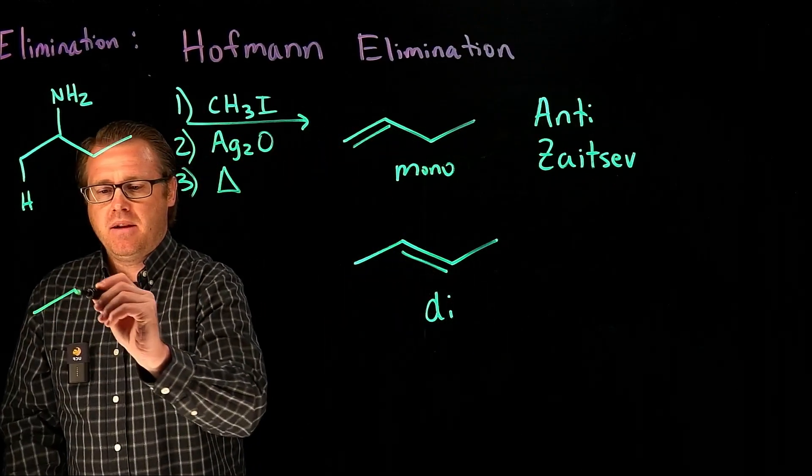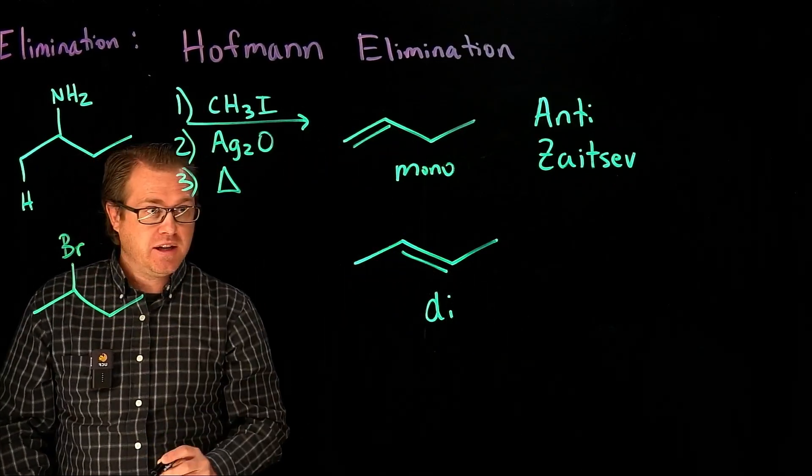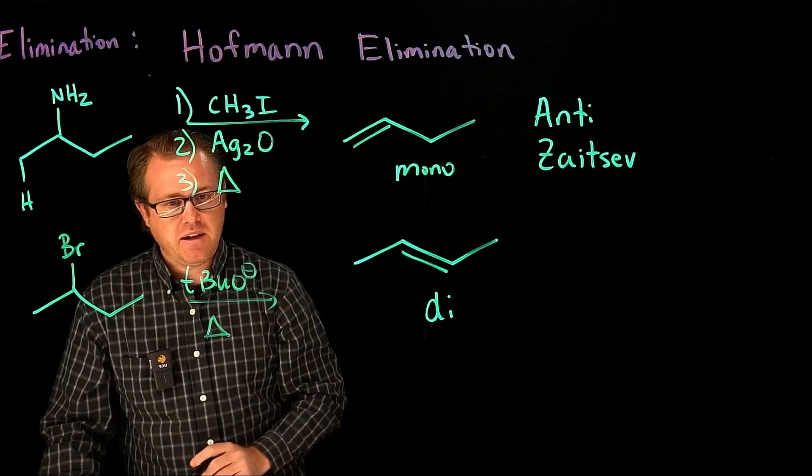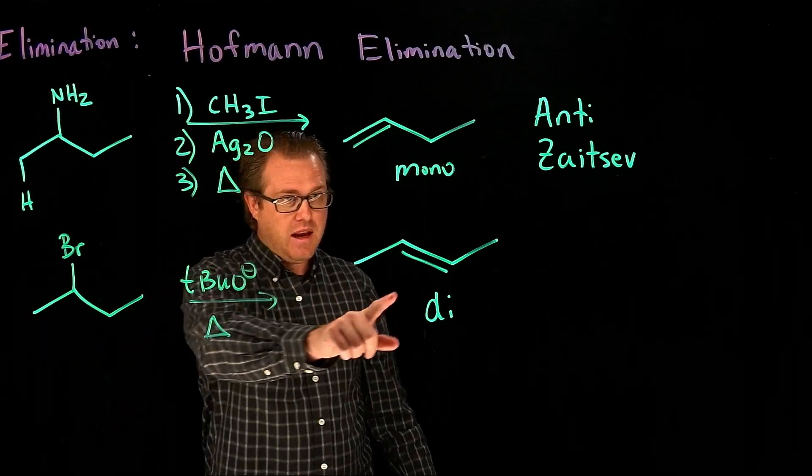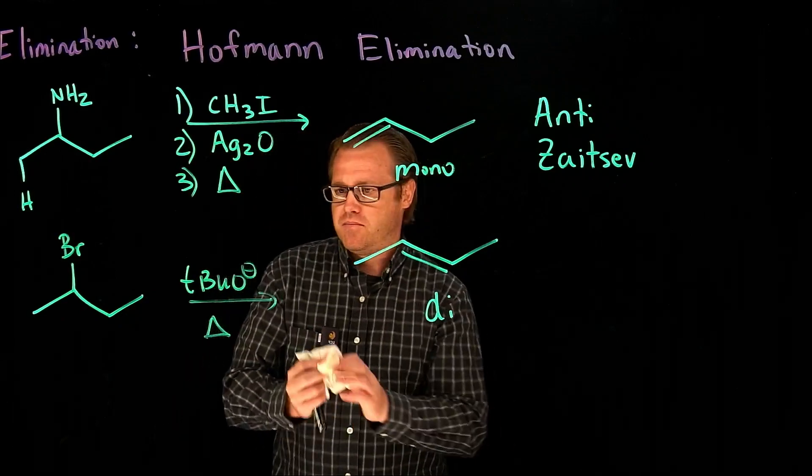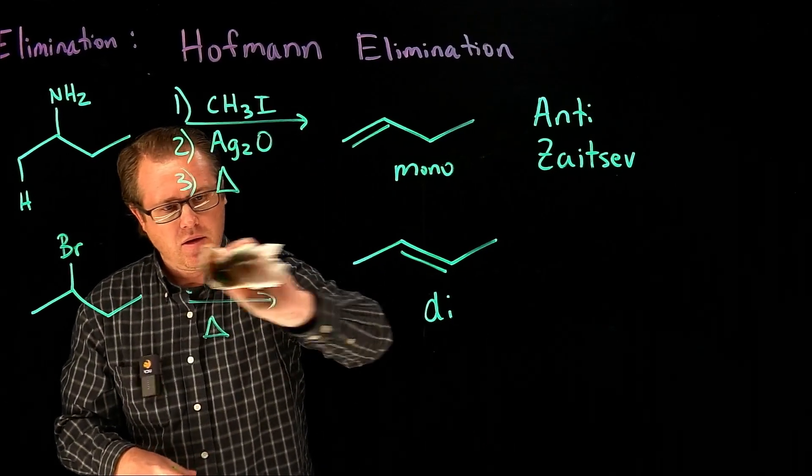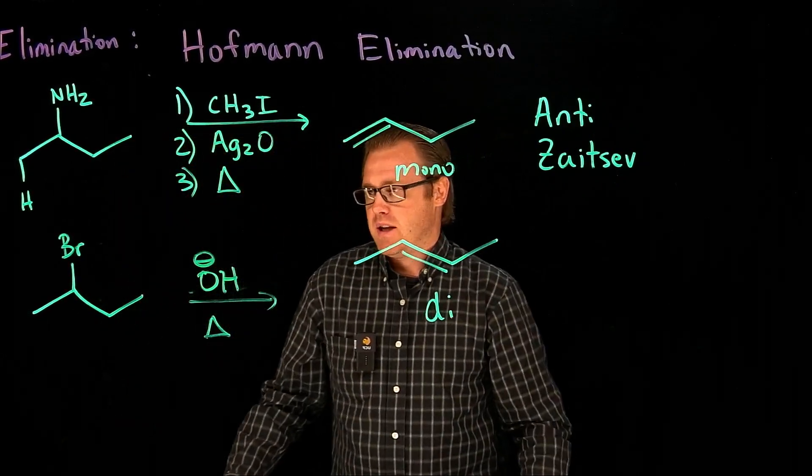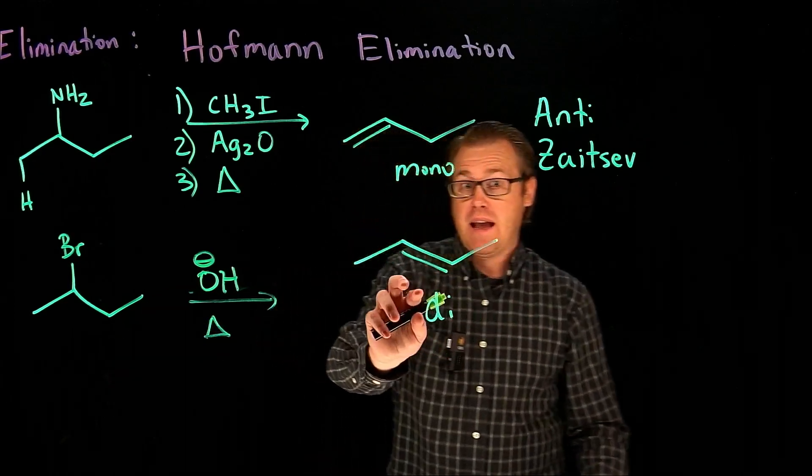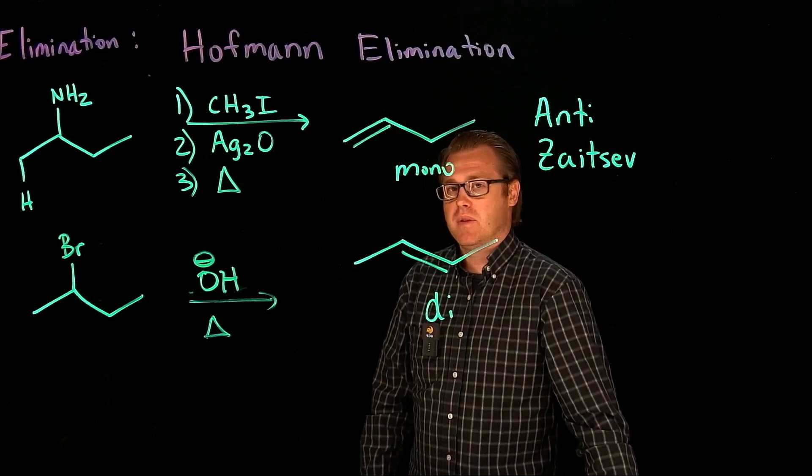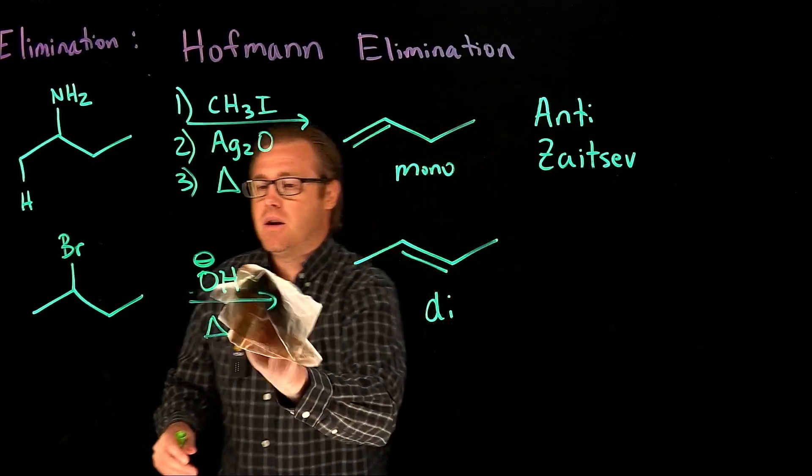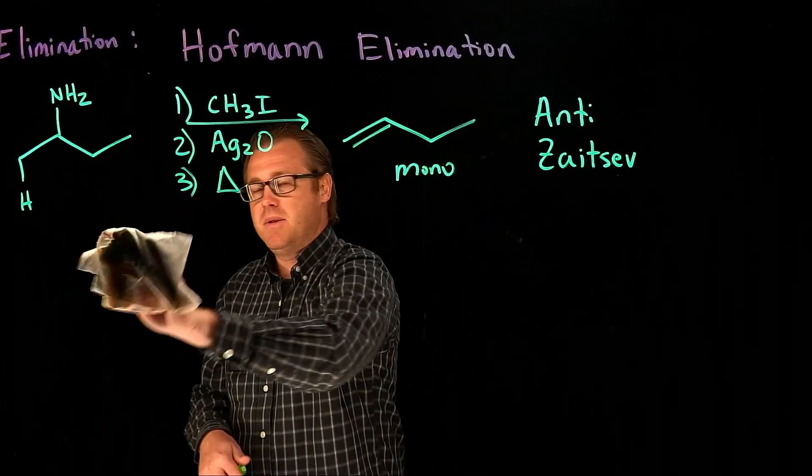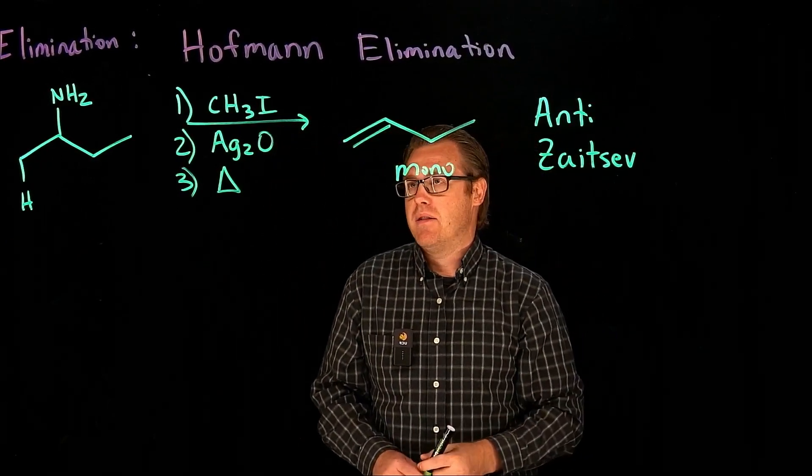What if we had a halogen here and treated this with tert-butoxide and heat? We would get the disubstituted product. But if you wanted this product, we could do a Hoffman. Let's go through the mechanism of this Hoffman elimination. It's really cool to see how this all works.